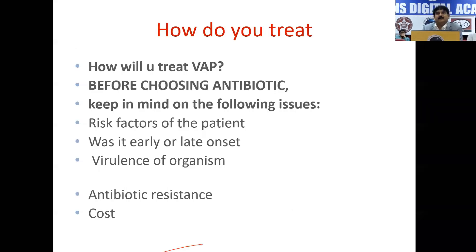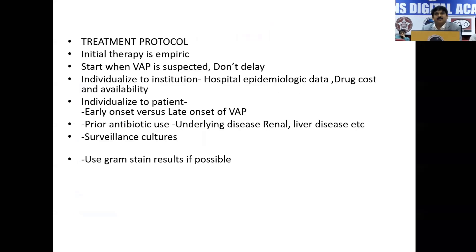Coming to how to treat VAP — before choosing the right antibiotic, keep in mind: what are the risk factors of the patient, was it early or late onset VAP, virulence of the organisms, antibiotic resistance, and the cost. Treatment protocol: initially start with empirical treatment. Start when ventilator-associated pneumonia is suspected — please do not delay. Individualize to the institution as different hospitals and ICUs have different organisms. Try to know the hospital epidemiological data, think about drug cost and availability.